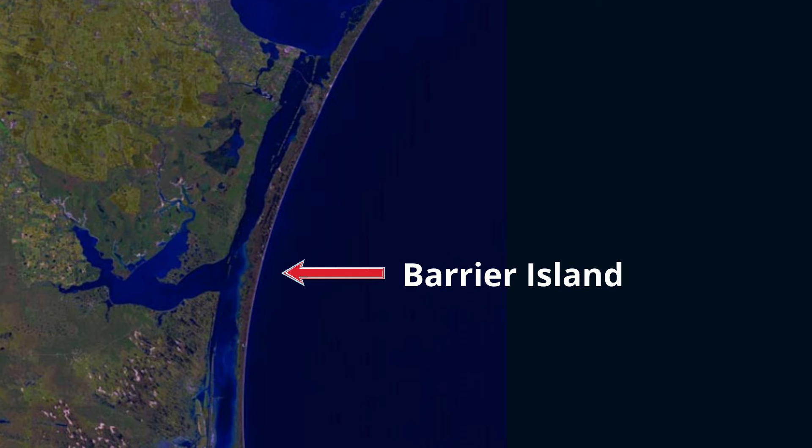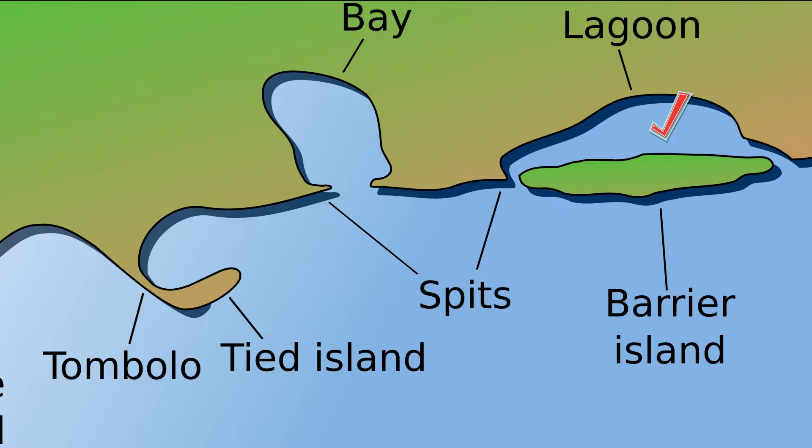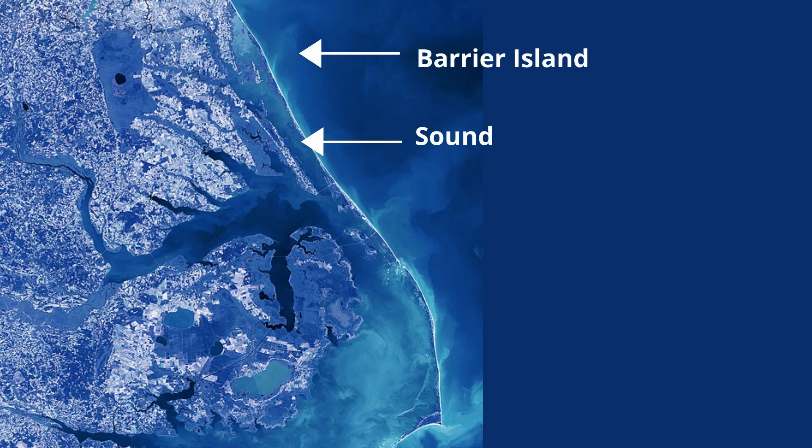A barrier island is a long narrow island that runs parallel to the mainland coast. It is separated from the mainland by a body of water such as a lagoon or a sound, which is a relatively narrow body of water between the mainland and an island.